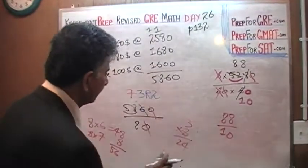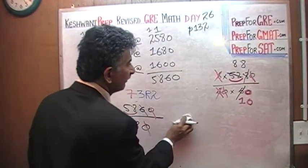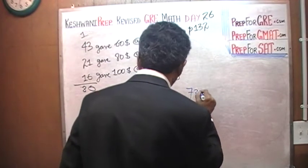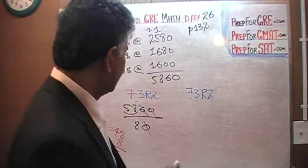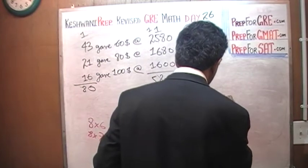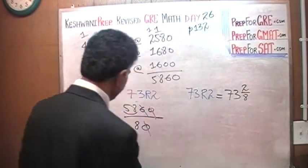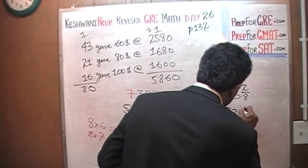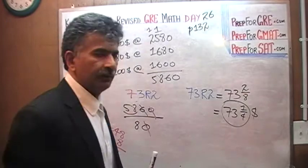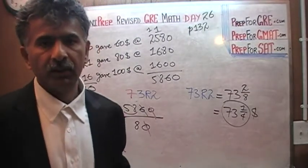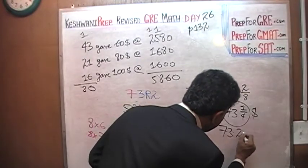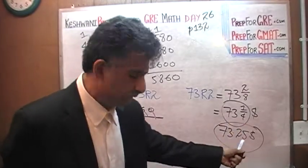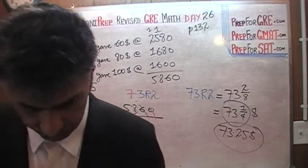So we have 73 remainder 2. 73 remainder 2 is same as 73 and 2 eighths, because we are dividing by 8. Remainder 2 is same as 2 eighths which is same as 73 and a quarter. That's how many dollars. Everybody on average gave $73 and a quarter, which is same as $73.25. That's it, we are done. 73.25 is the answer.